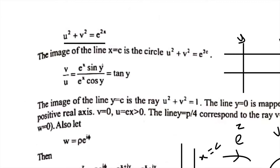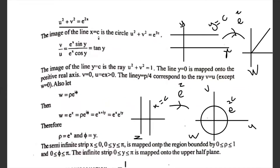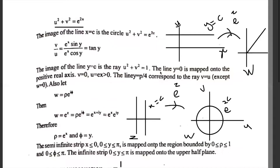The image of the line x = c under the mapping w = e^z: putting x = c in the equation gives u² + v² = e^(2c), which represents a circle with center (0, 0) and radius e^c, as seen in the graph.